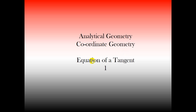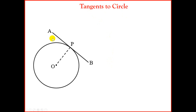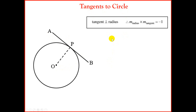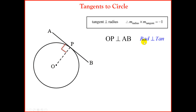Today we're looking at equations of a tangent to a circle. We have a tangent AB and a circle with center O. A theorem from geometry states that the tangent is perpendicular to the radius, which implies that the gradient of the radius times the gradient of the tangent is equal to minus 1. So OP is perpendicular to AB, and our reason is that the radius is perpendicular to a tangent.